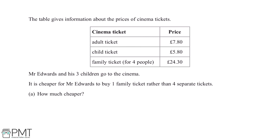So if Mr Edwards is bringing three children with him, then this means he'll be buying one adult ticket for himself and then three child tickets for the three children. So we can start off by working out how much this will cost.